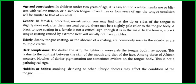Age and constitution: in children under two years of age, it is easy to find a white membrane or blisters with yellow mucus or a swollen tongue. Over three or four years of age, a tongue condition will be similar to that of an adult.